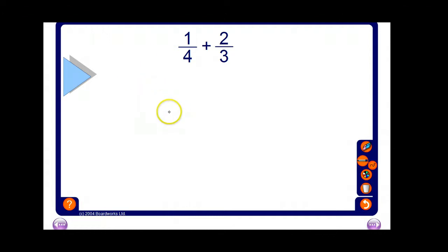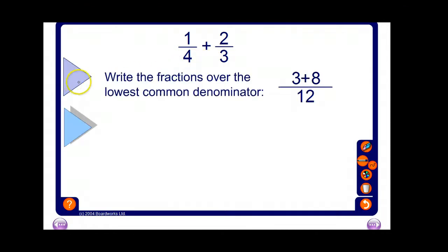Okay, almost there. Look at this one. If you want to pause the video now and try to see what's going on, think of the number these are both going into. Okay, so let's see if you're right. Four and three both go into 12, don't they? Write the fractions over the lowest common denominator, so 12 is the first number they're both going to.